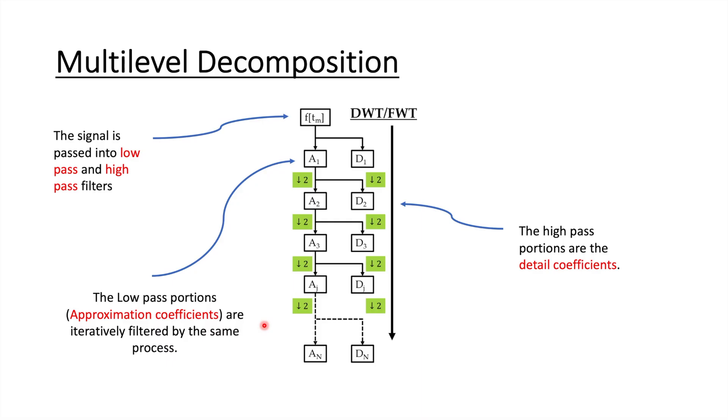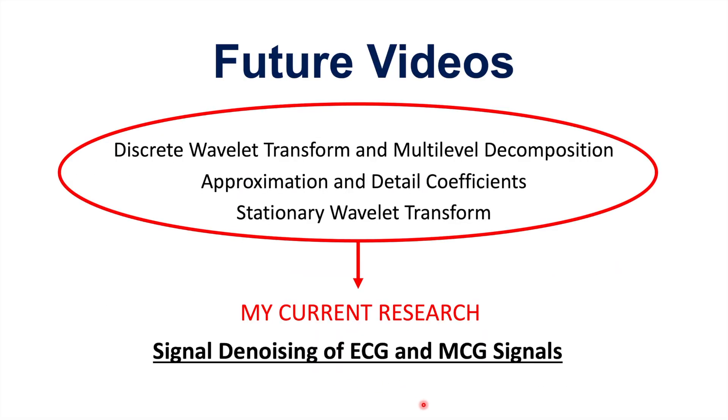So the high-pass portions are the detail coefficients. So the number of coefficients, number of approximation and detail coefficients, halve for each decomposition level. This is called the decimated discrete wavelet transform. So by the end of the process, we end up with sets of approximation and detail coefficients. So in future videos, we're going to look at the discrete wavelet transform and multi-level decomposition in more detail, as well as the approximation and detail coefficients. I will also introduce you to stationary wavelet transforms, because this all leads into my current research I'm doing at the moment, which is on signal denoising of ECG and MCG signals, which involves taking away the transform of a signal, applying some thresholds and stuff like that, and then outputting a denoised ECG signal. So I'll see you in the next videos.